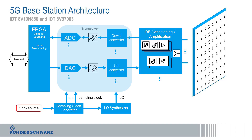Hello and welcome to our Demystifying 5G video series. Today we will take a look at the clock and LO architecture in a 5G base station, and particularly the subject of what is happening if a clock suddenly disappears. The clock drives the sampling clock generator, it drives the local oscillator, and of course it needs to be there.